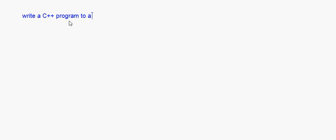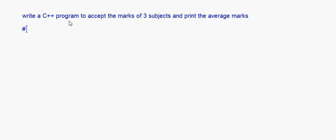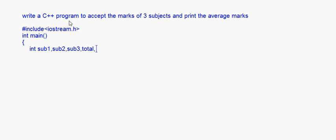Now one more small program I want to take up: write a C++ program to accept the marks of three subjects and print the average marks. We start with #include <iostream.h> and int main(). I need three variables for the subjects. Since marks can be like 89.5 or 58.5, it's better to take everything as float. So I declare: float sub1, sub2, sub3, total, avg.